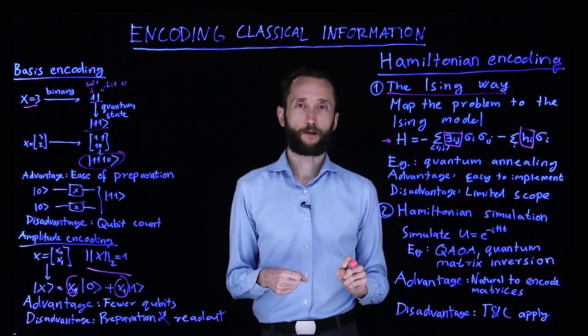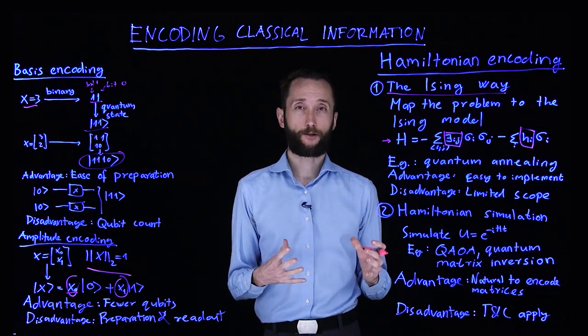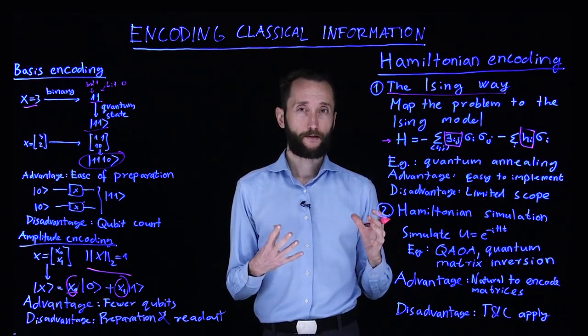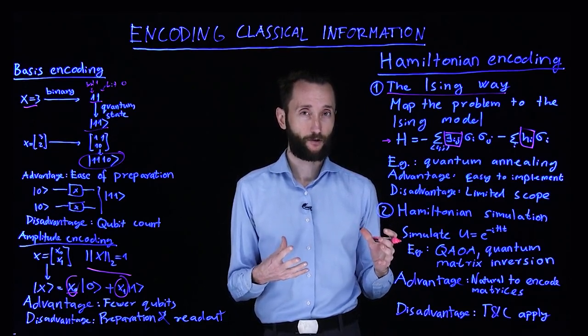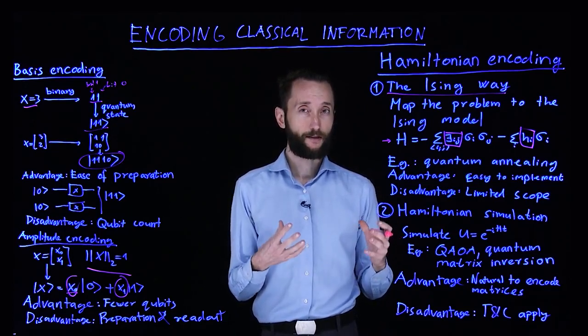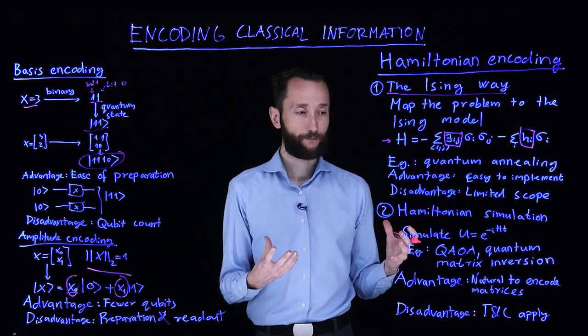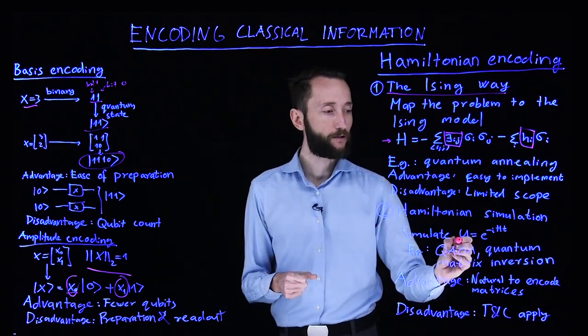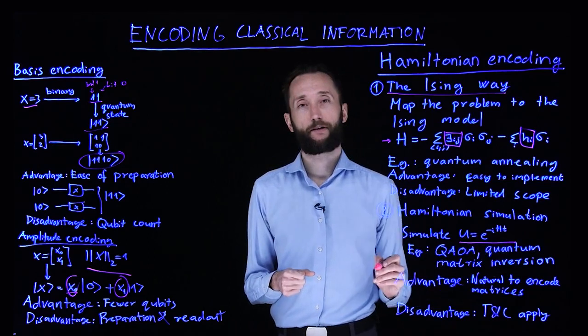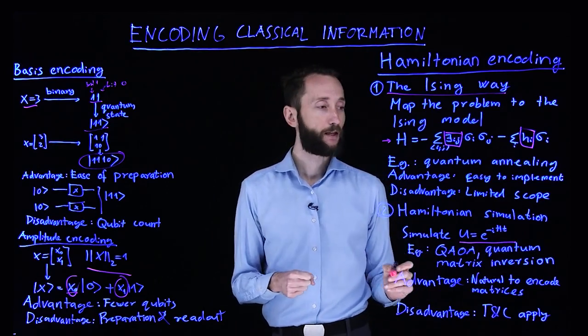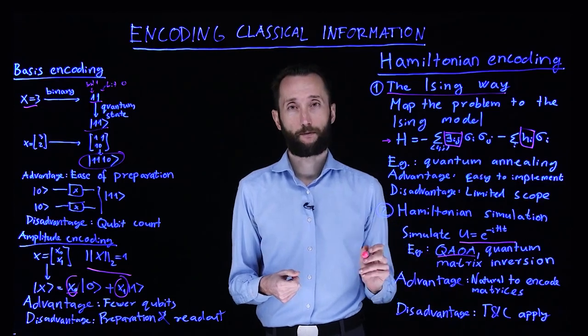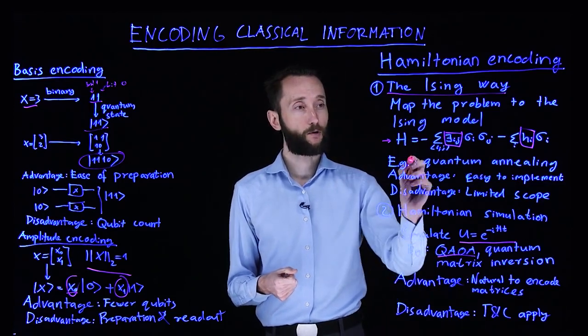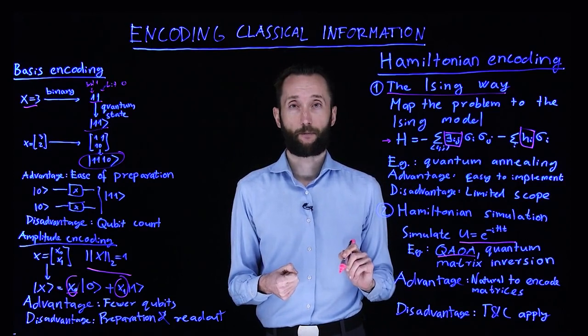Then the second way of doing Hamiltonian encoding is by doing Hamiltonian simulation. Now the simulation is a bit misleading because this is not a simulation on a classical digital computer. This is a quantum computer simulating a quantum system. So what you are doing is actually you are trying to implement this unitary on a quantum computer. And an example of this is exactly what the QAOA optimization algorithm does, when it approximates the adiabatic pathway.